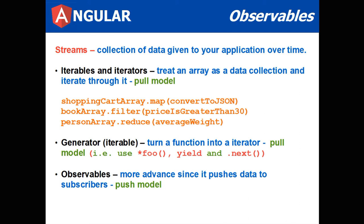Then we also have a concept of a generator, which is an iterable. It turns a function into an iterator. It also has a pull model. If you put an asterisk in front of a function name, you turn it into a generator. And in that function implementation, you could use the yield to denote different parts of the function that you want to execute to. The dot next will execute different pieces of the function. You could put a yield in the middle of the function and execute the first half of the function, then execute the second half using the next operator.